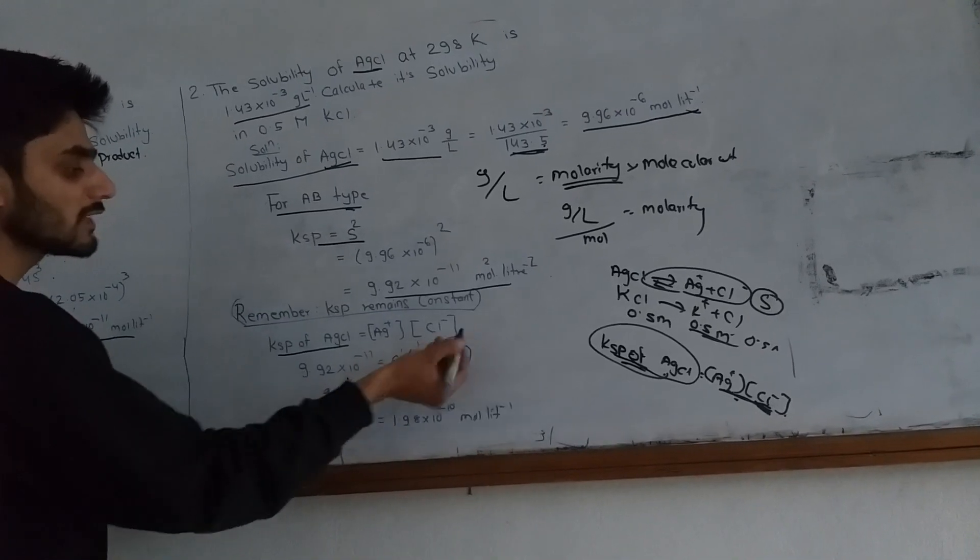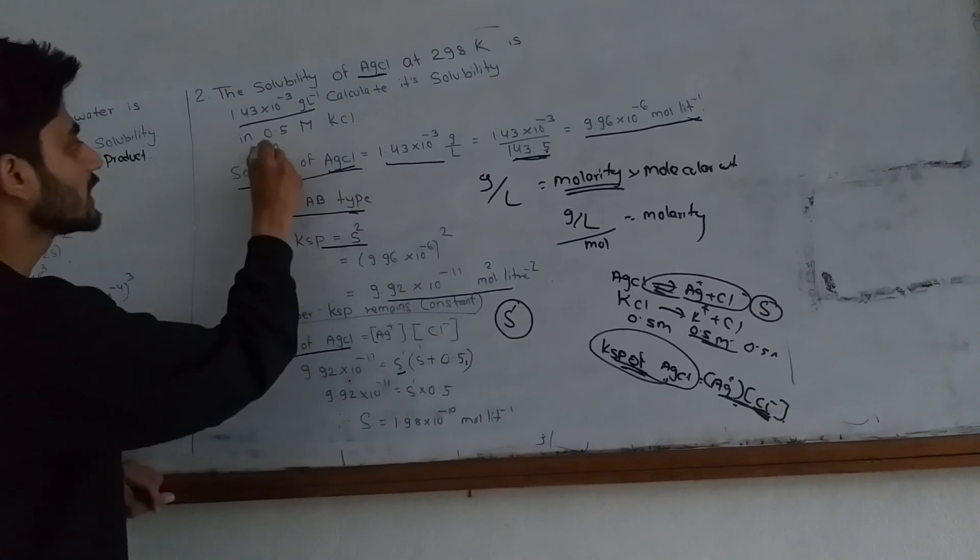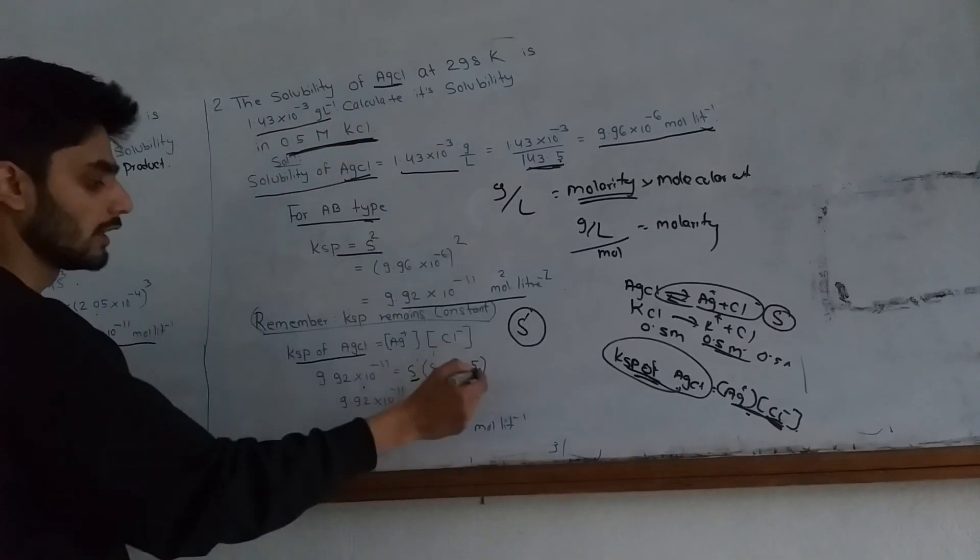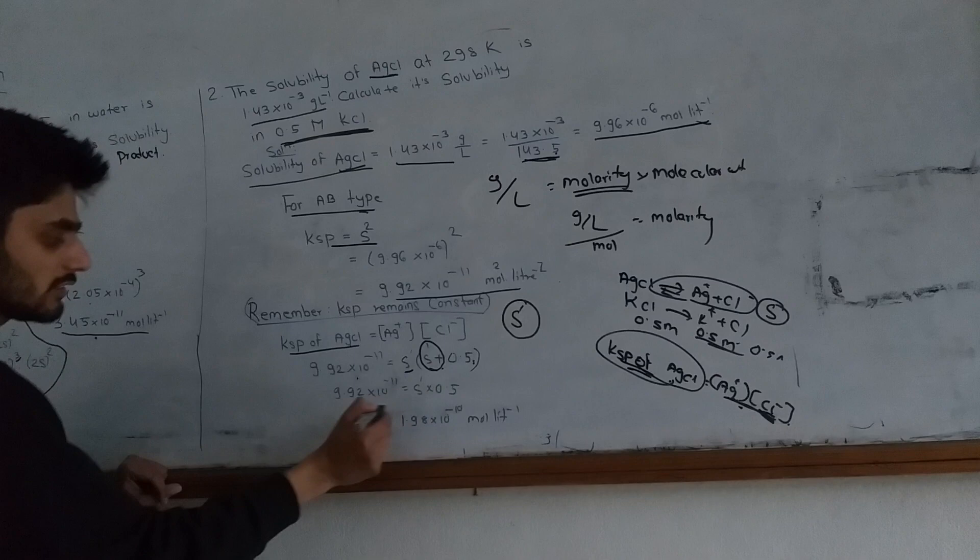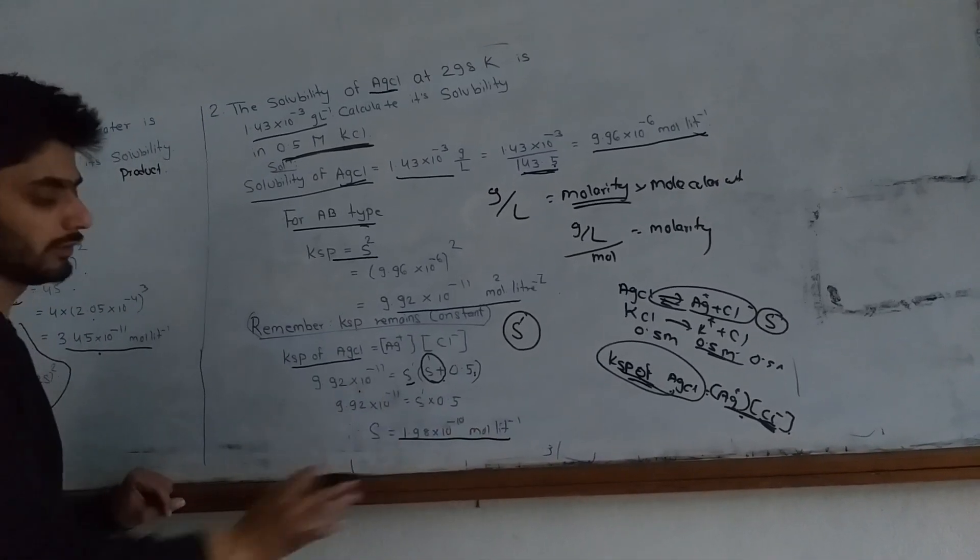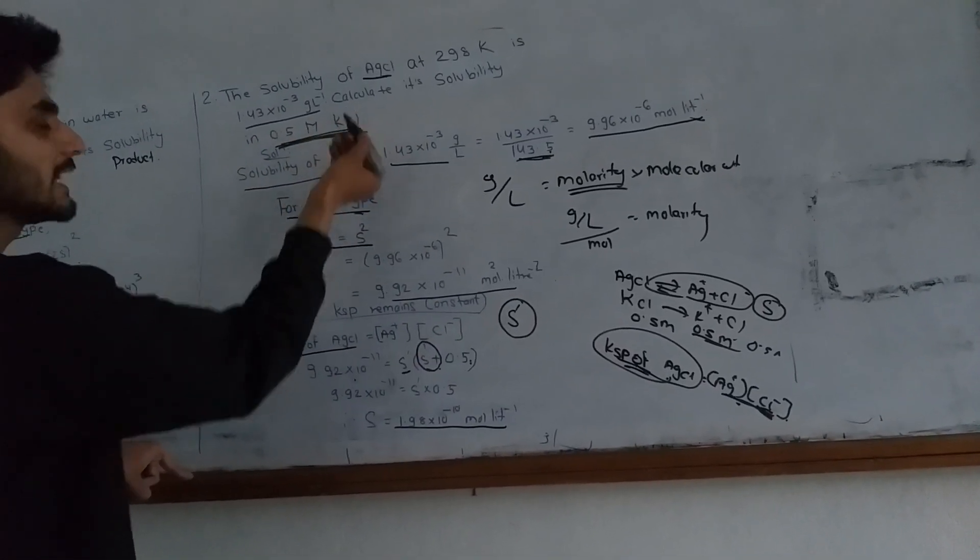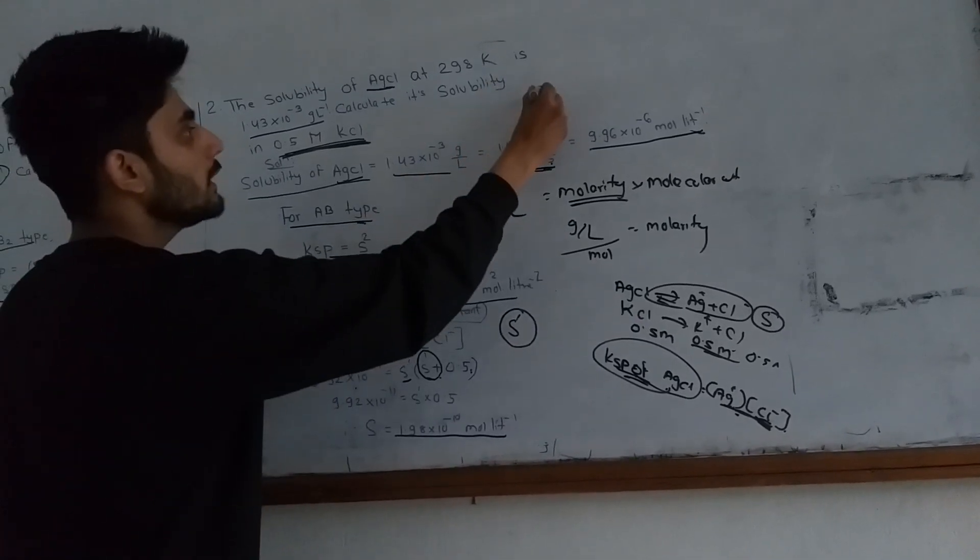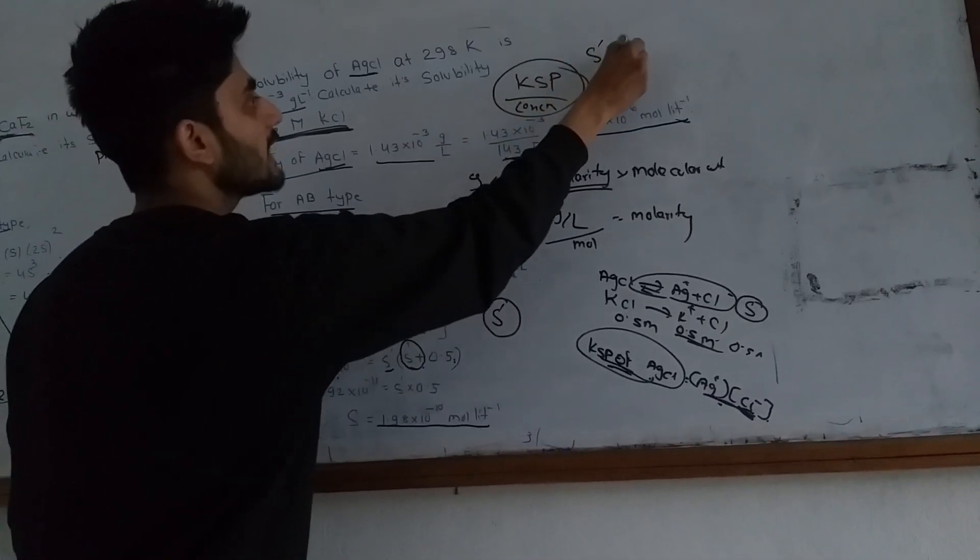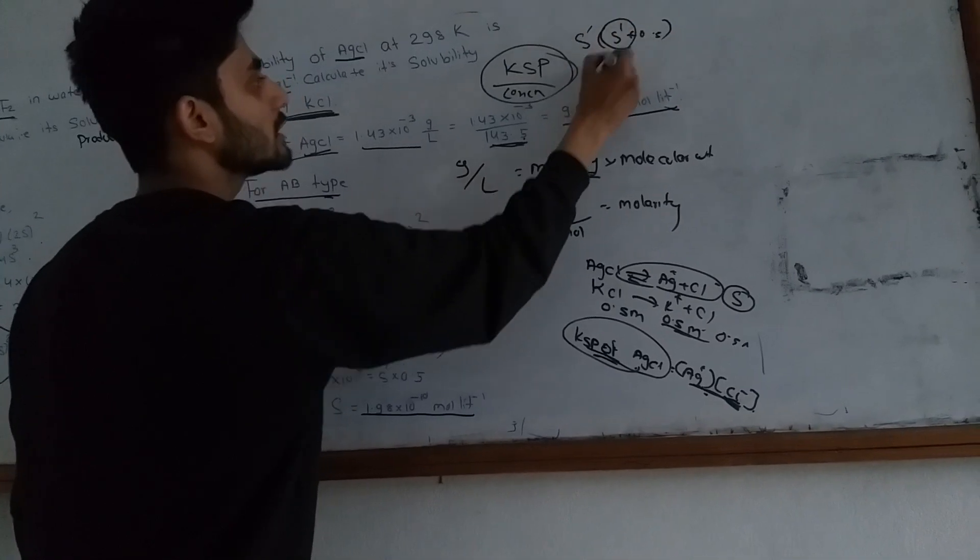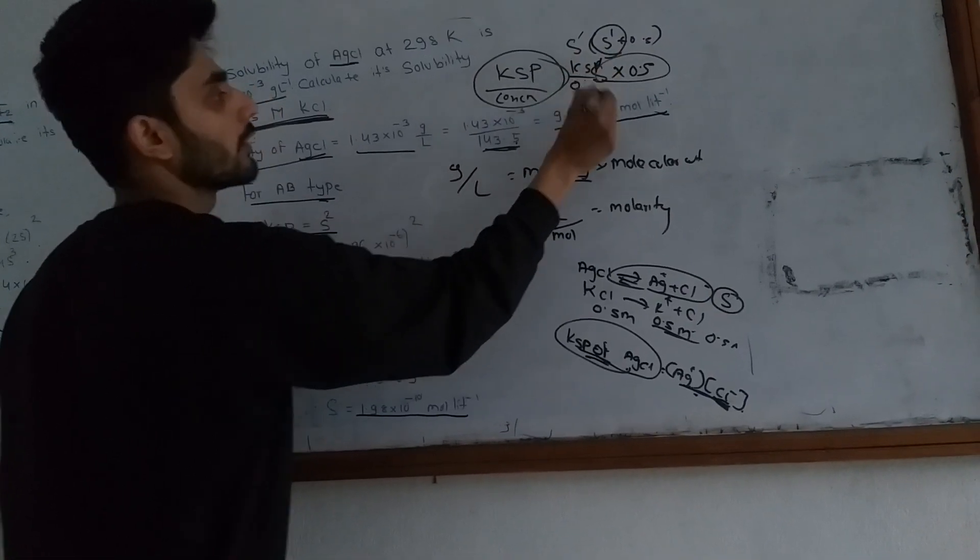We use S dash. S dash plus 0.5, where 0.5 is the concentration from KCl. Since S dash is very small compared to 0.5, we can neglect it. So KSP equals S dash into 0.5, giving S dash equals KSP divided by 0.5.